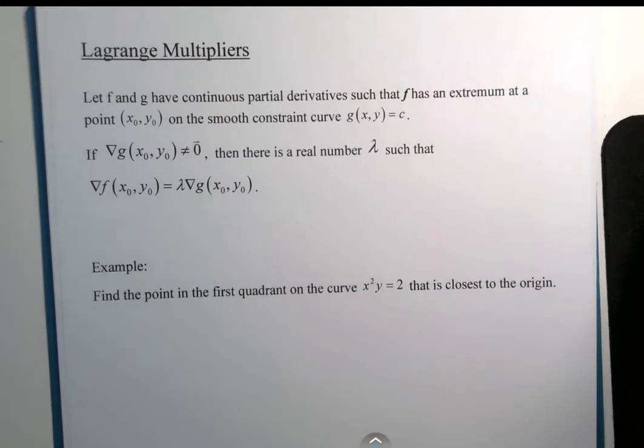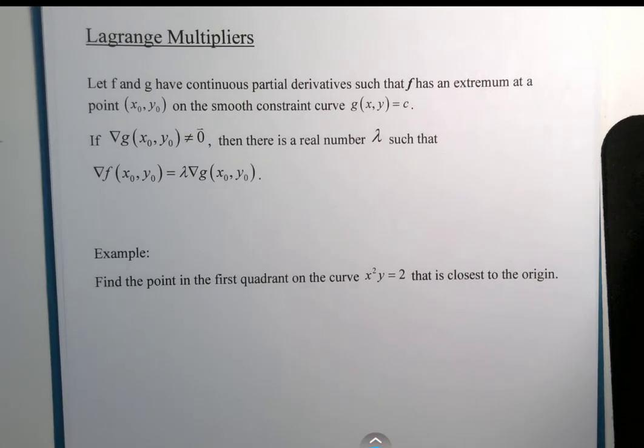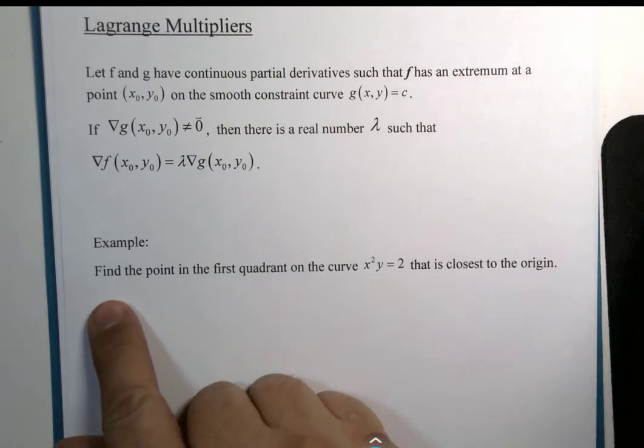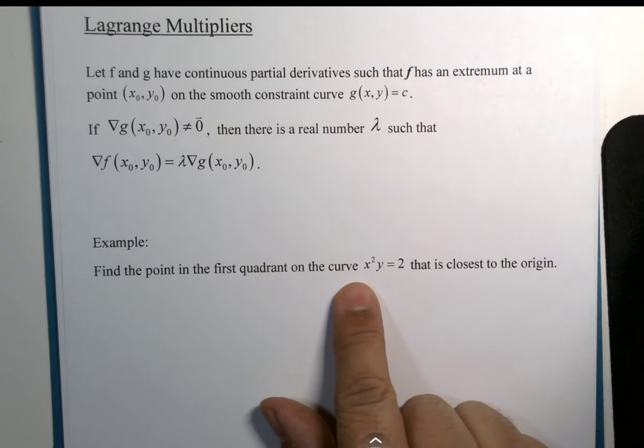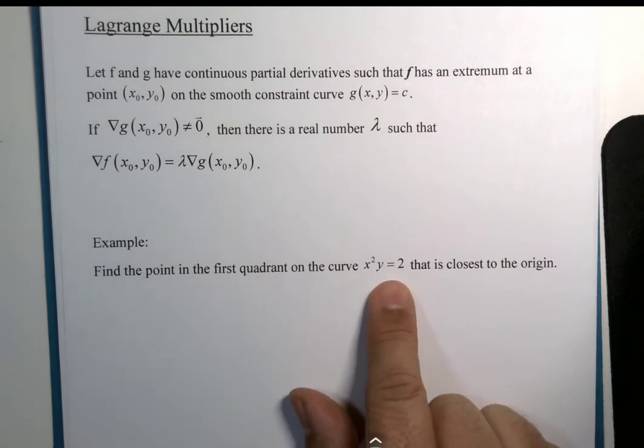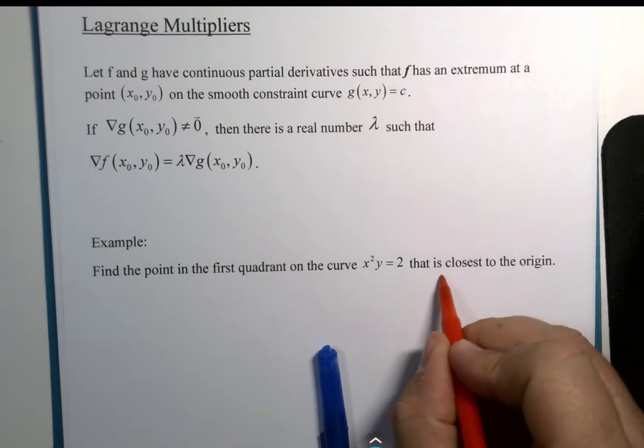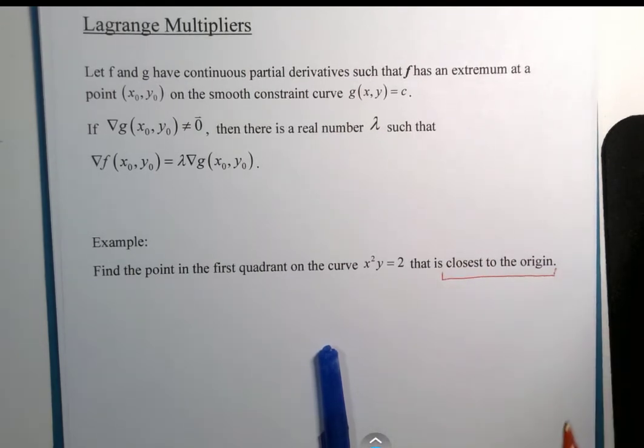Let's read this example, which means I'm going to read it to you. Let's see if we can't figure out what the question is about. Find the point in the first quadrant on the curve x squared y equals 2 that is closest to the origin.